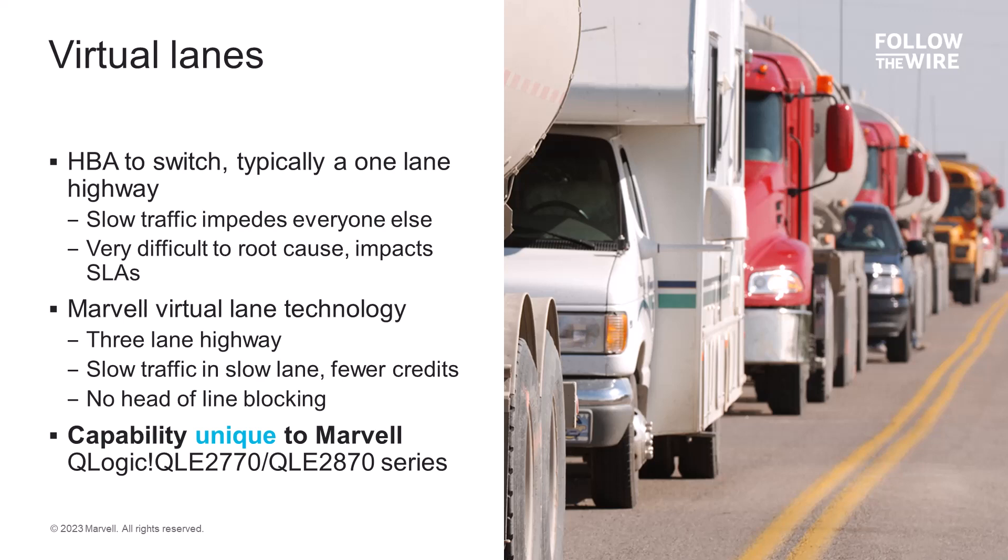Similar to a highway, with virtual lane technology the adapter port gets segmented into three different lanes: a normal, slow, and fast lane. This allows slow traffic to be quarantined from the faster traffic — similar to trucks using the slow lane to allow faster cars to pass easily on the highway.